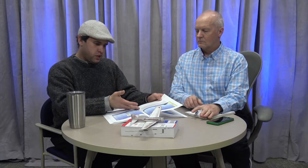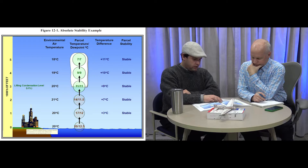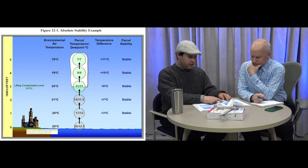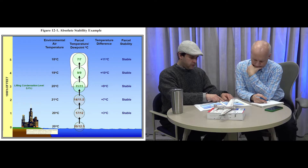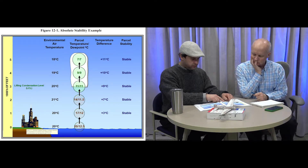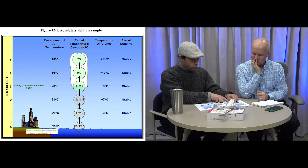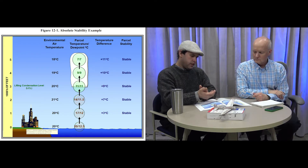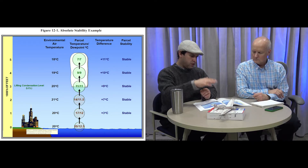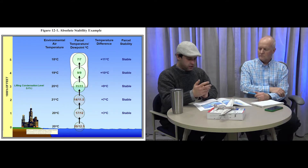In figure 12-1, the environmental temperature is always warmer than the lifted parcel at each level — that's absolutely stable air, which will always want to return to where it started. Figure 12-2 shows neutral stability: starting at 20°C at the surface, lifting 1,000 feet brings it to 17°C, and the ambient air is also 17°C. At 2,000 feet, both are 14°C; at 3,000 feet, both are 11°C. The air won't resist being lifted, but it won't self-amplify either.